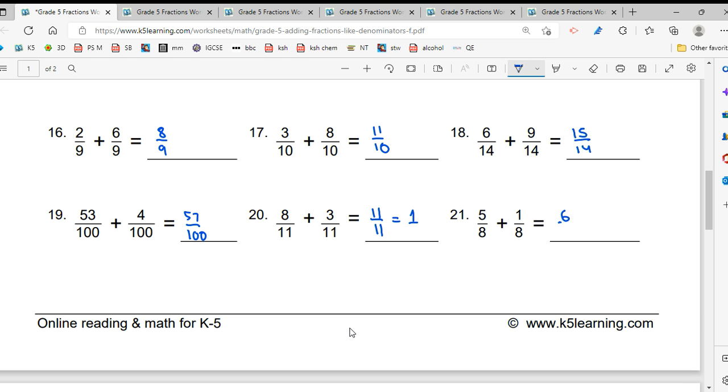Ab next, 6 upon 8. Ab 6 bhi 2 se divide ho ta hai, 8 bhi 2 se divide ho ta hai. To dono ko 2 se divide kardo, Simplify kardo. 2 3s are 6, 2 4s are 8. Kya yeh, Smajh mein aya? Yes sir. Easy peasy. Yes sir. High five that.